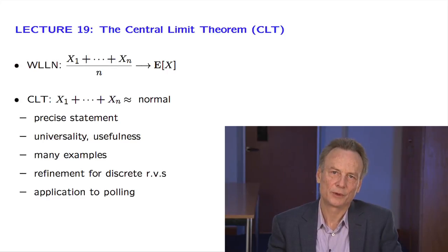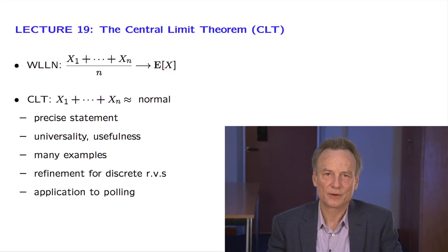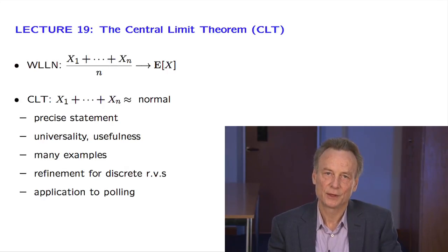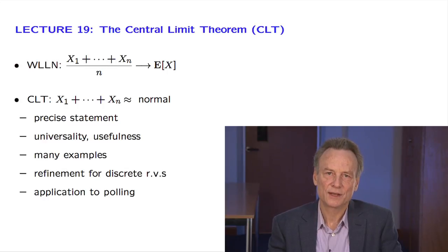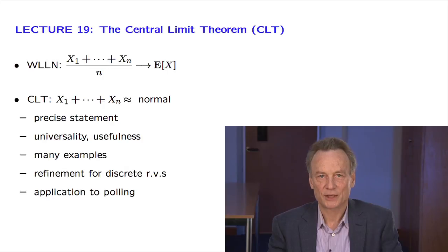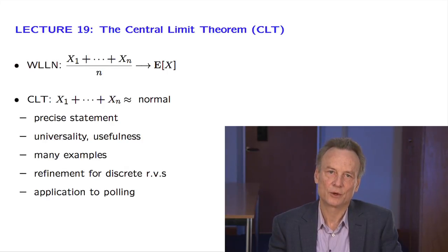Finally, we will revisit the polling problem and inquire again about the number of samples needed to obtain a certain accuracy with a certain confidence. We will see that the central limit theorem is much more informative and much less conservative compared to the conclusions obtained before based on the Chebyshev inequality.